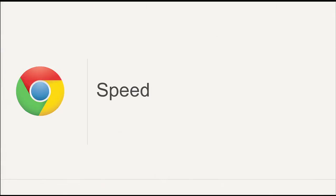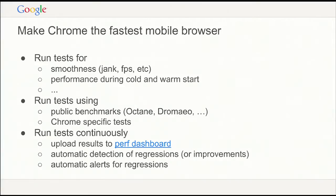I'll talk about these in turn, starting with speed. We want to make Chrome the fastest mobile browser, and we want a variety of tests. We look at things like smoothness — when you load a page, when you're scrolling, everything is fast — jankiness, frames per second, all the useful stuff. We're also looking at Chrome startup time, whether you start Chrome from inside Gmail or Facebook. Chrome should really start fast.